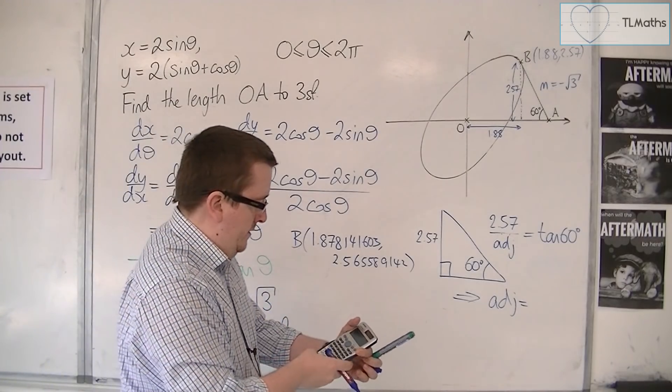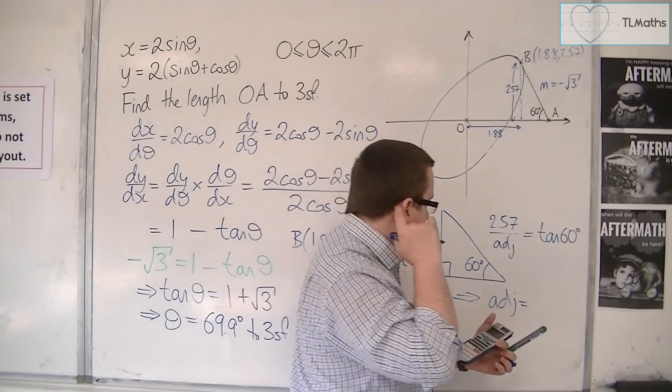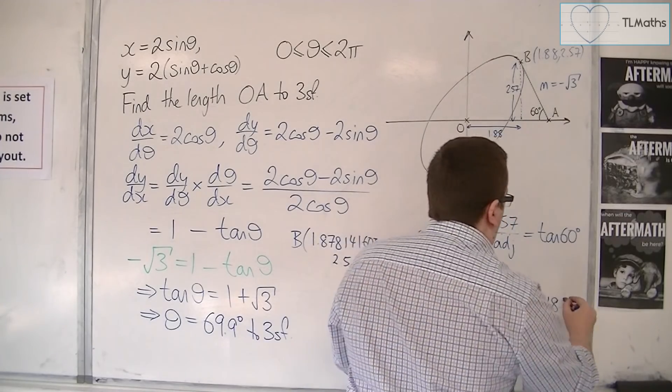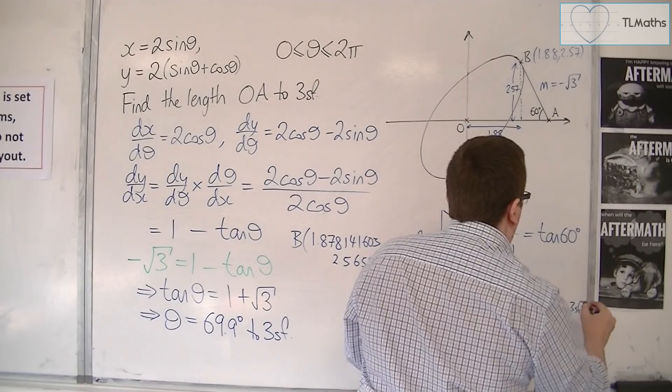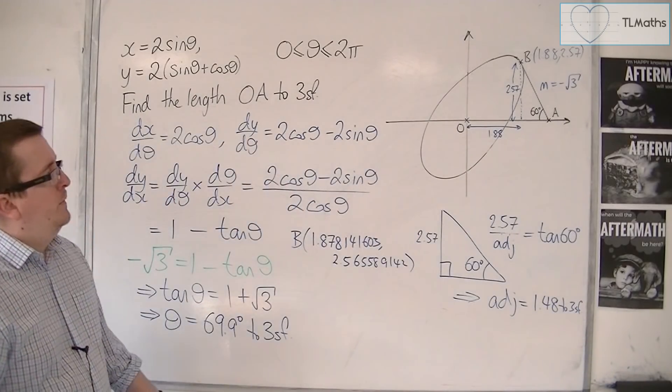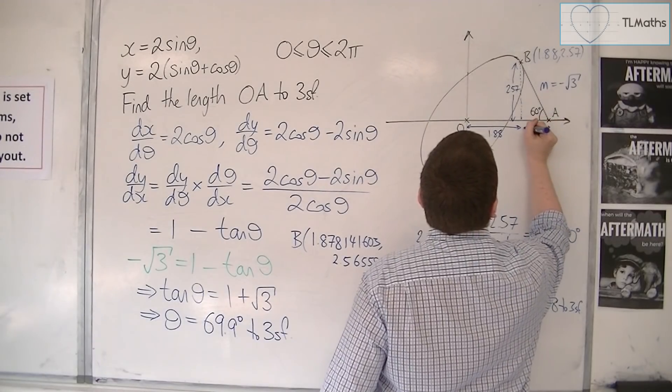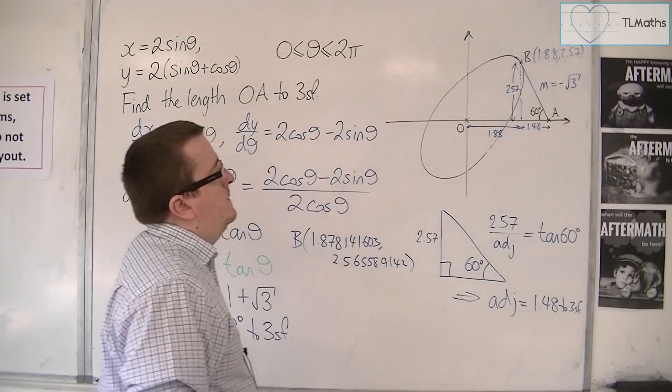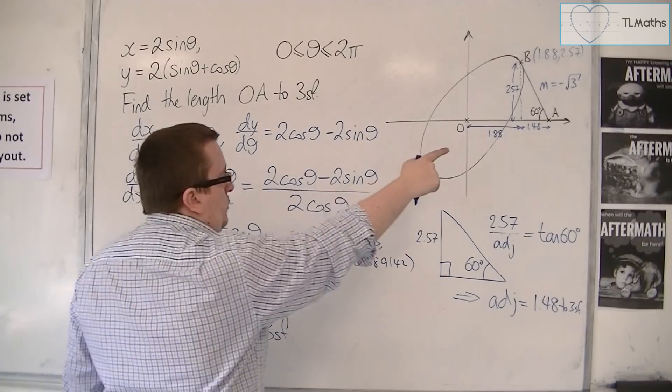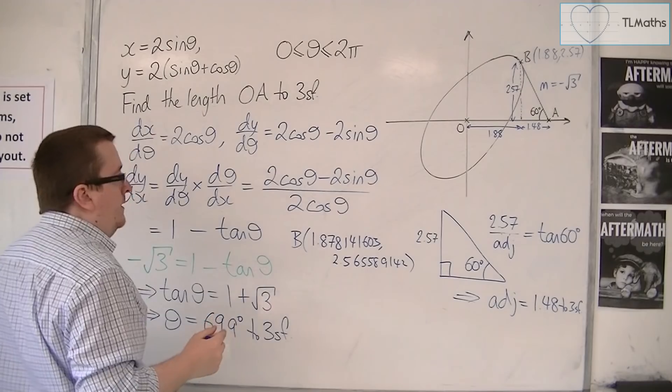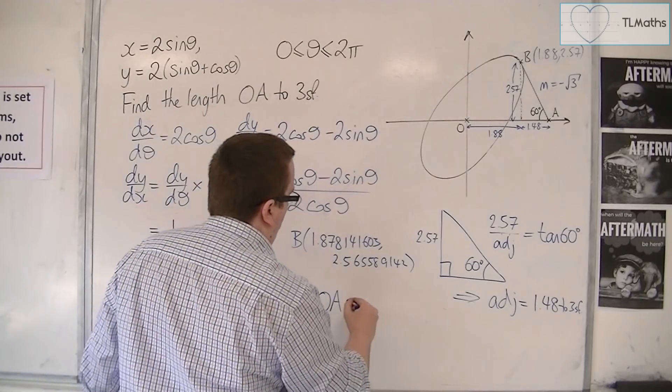Divide by tan 60, and that gets me 1.48 to 3 significant figures. So that is 1.48.